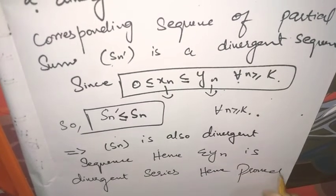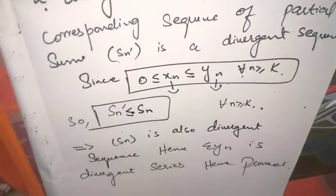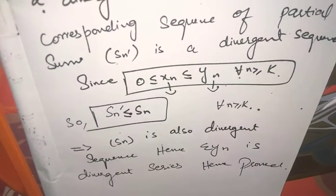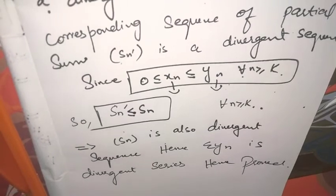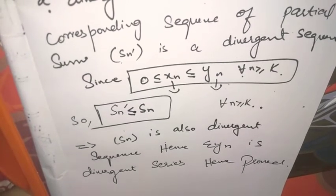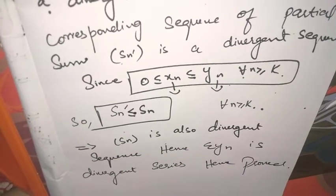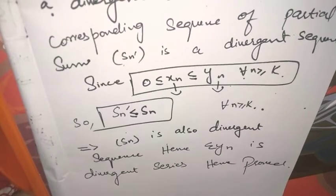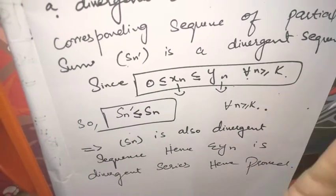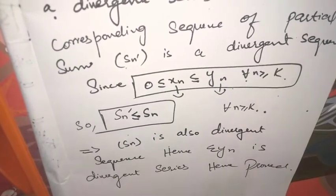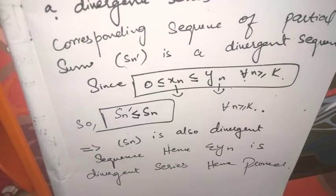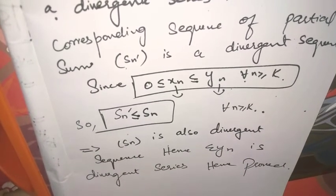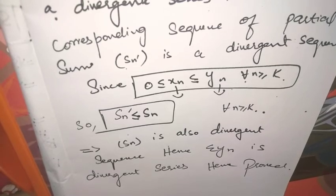Hence یہ چیز prove ہو گئی۔ I hope کہ آپ کو comparison test اچھی طرح سے سمجھ آ گئی ہوگی۔ Inshallah ہم اس کو questions پر apply کر کے بھی بتائیں گے — کہ کیسے ہم کہتے ہیں کہ اگر ایک series converge کر رہی ہے تو دوسری بھی، اور اگر چھوٹی diverge کرے تو اگلی بھی۔ اگلی new video کے ساتھ ملاقات ہوگی۔